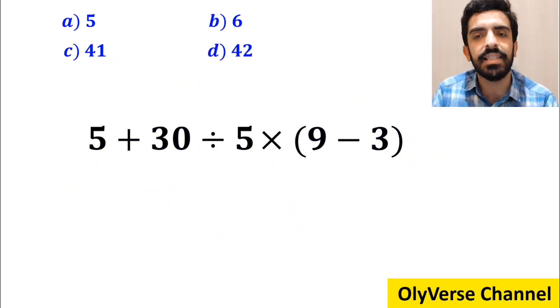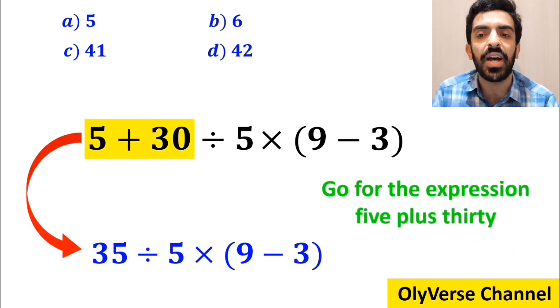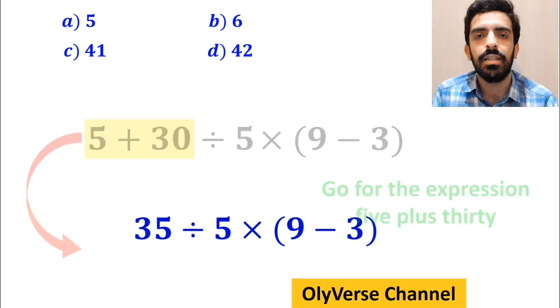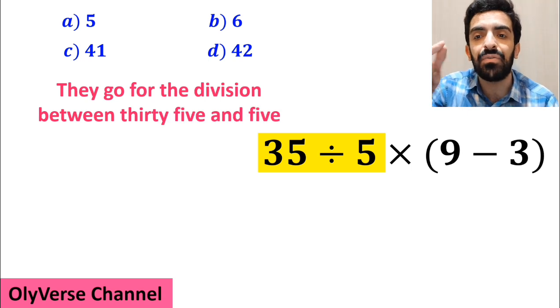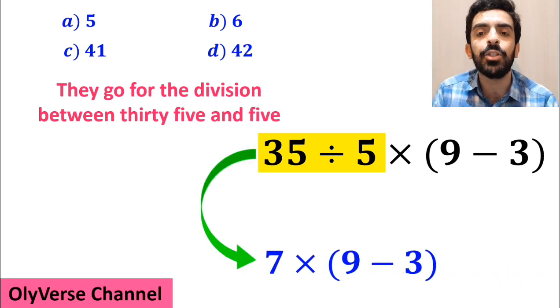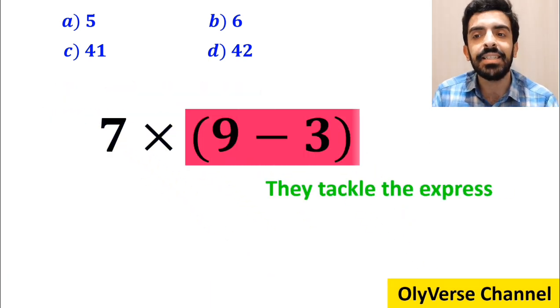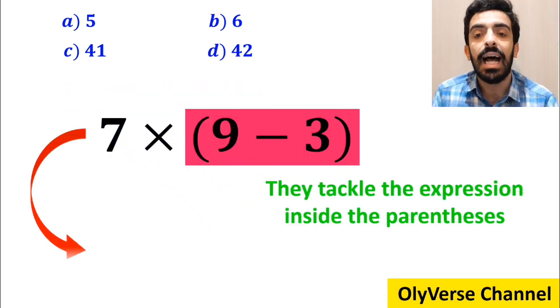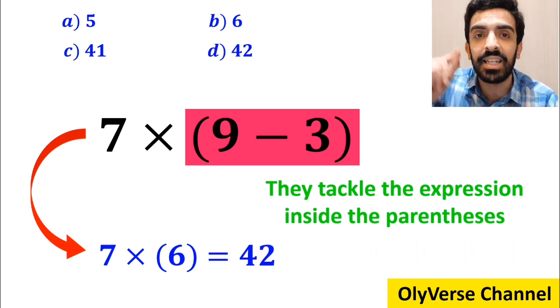Many people when solving this question first go for the expression 5 plus 30 and write this expression as 35 divided by 5 times 9 minus 3 inside the parenthesis. And the next step they go for the division between 35 and 5, and this expression simplifies to 7 multiplied by 9 minus 3 inside the parenthesis. And the final step they tackle the expression inside the parenthesis and write it as 7 times 6, which ultimately gives them the answer 42.